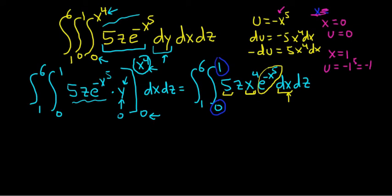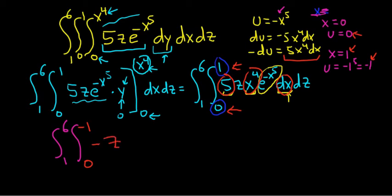So now I'm going to come down here and rewrite our integral, so 1 to 6. Let's be really careful here. Let me get a better color. So that's 0. And when x is 0, we said u was 0. So I'm going to put a 0 here. And that's 1. So when x is 1, we said u was negative 1, so I'll put a negative 1 here. And now we're going to make the substitution, so everything should be in terms of u now. So we have 5x to the fourth dx. There's 5. There's x to the fourth. There's dx. All of those red circles are going to turn into negative du. So negative z e to the u du dz.